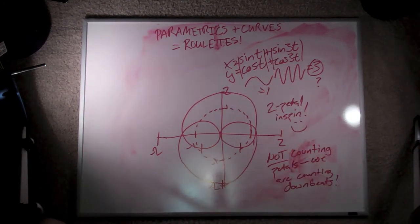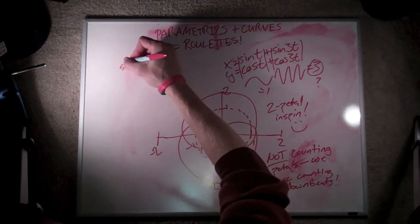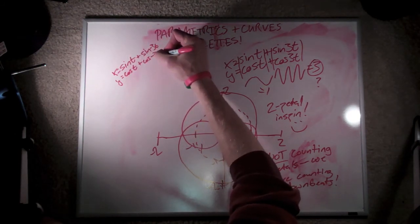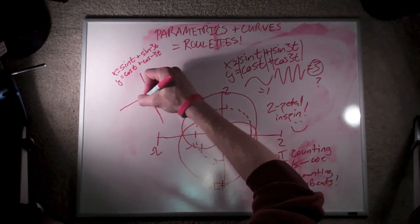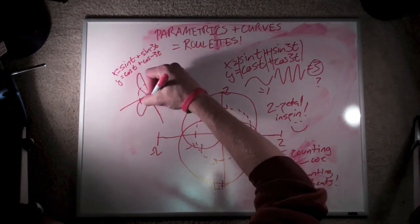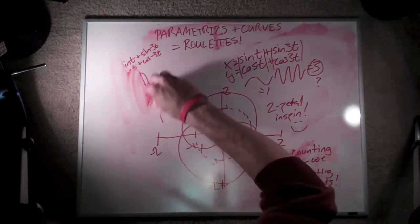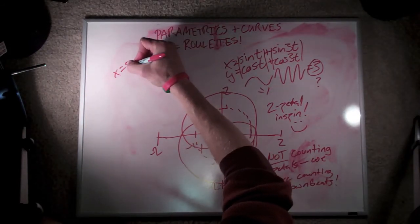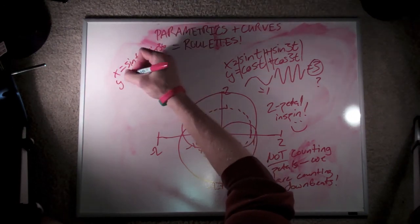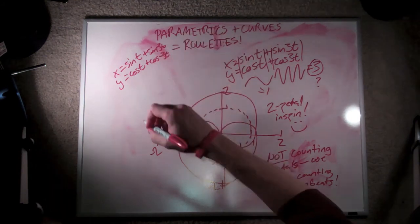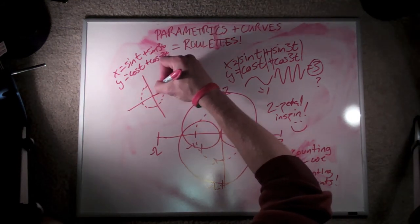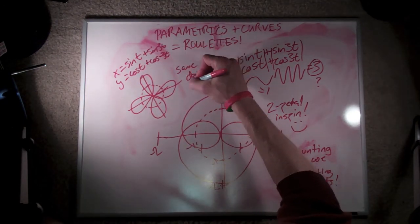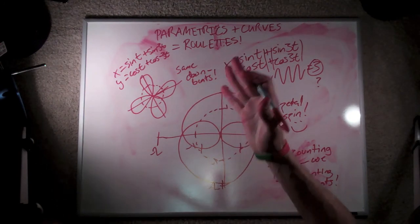What about antispin? So glad you asked. Let's instead take x equals sine t plus sine negative 3t, and y equals cosine t plus cosine negative 3t. The negative number in front is shorthand for turning the opposite direction. And if we go for three downbeats this time, we get a four-petal antispin flower. A four-petal antispin flower actually has the same number of downbeats, if you count it, as the two-petal inspin. Ta-da!